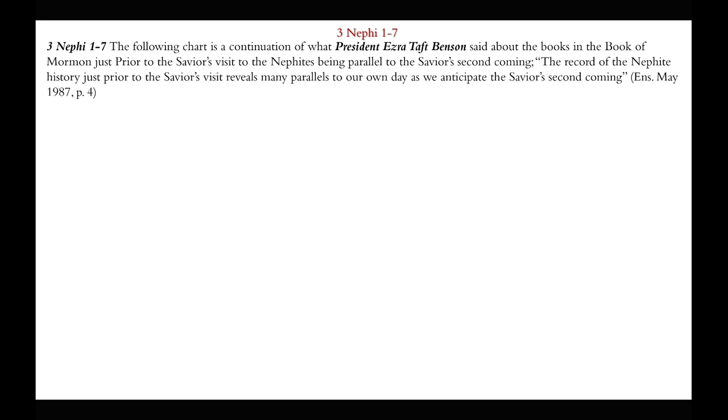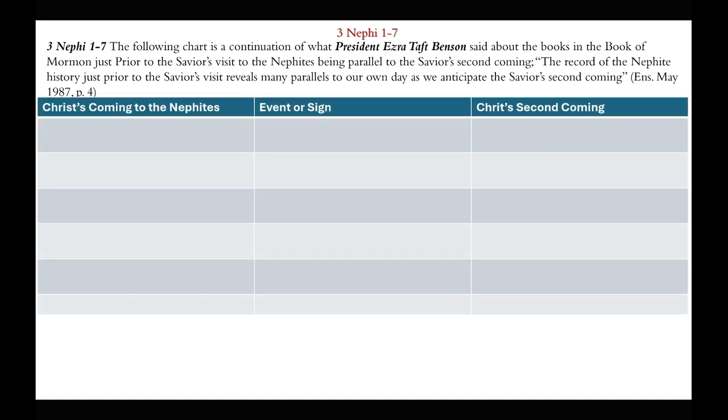3rd Nephi chapters 1 through 7. The following chart is a continuation of what President Ezra Taft Benson said about the books in the Book of Mormon just prior to the Savior's visit to the Nephites being parallel to the Savior's second coming. We have done this with the last three episodes in Helaman and we finish now with 3rd Nephi. President Benson said, 'The record of the Nephites' history just prior to the Savior's visit reveals many parallels to our own day as we anticipate the Savior's second coming.' Here are some of those parallels found in 3rd Nephi chapters 1 through 7, with the references of Christ's coming to the Nephites, the event or sign that was given, and how that will parallel Christ's second coming.